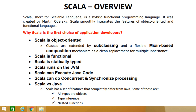Third, Scala is statically typed. Unlike some other statically typed languages like C, Pascal, or Rust, Scala does not require redundant type information — you don't have to specify a type in most cases. The type of a variable is determined during the compilation phase, not at runtime.